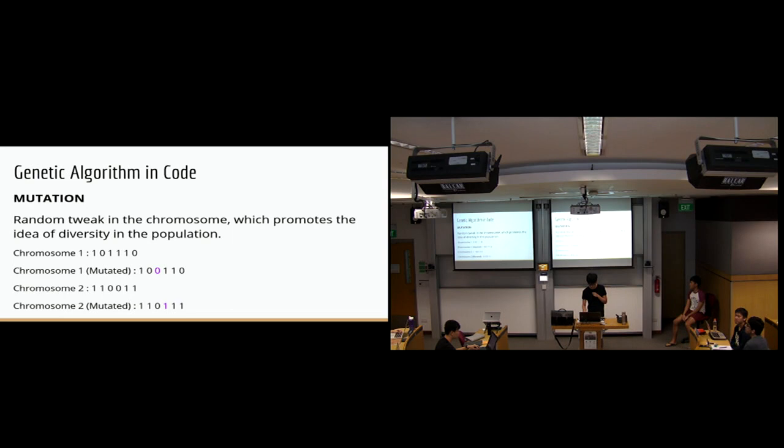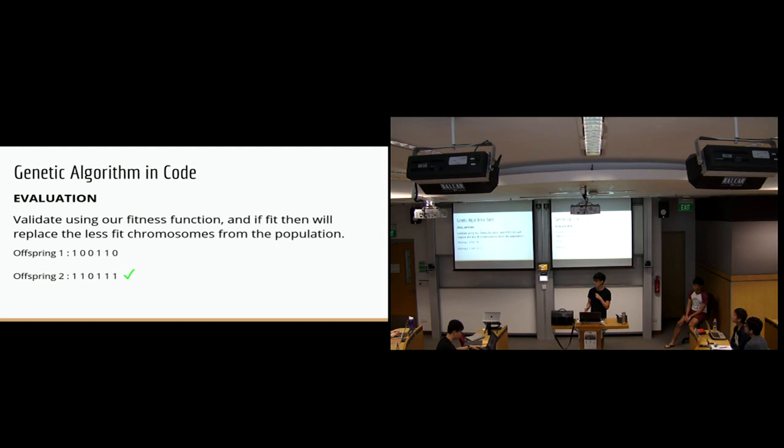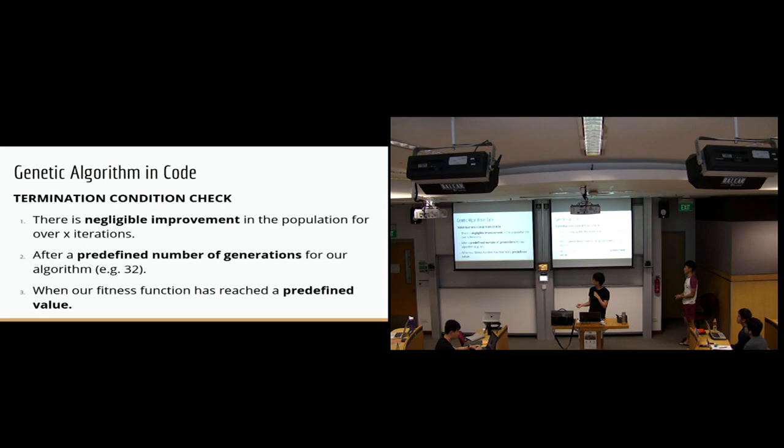Lastly, we will evaluate which one is, based on what we defined as a fitness function earlier. The more ones there is, it's a better chromosome. After that, we will just pick this one, and then we use it for selection and breeding again and again, until we reach a point where we are satisfied with the code, or whether we have reached the function.